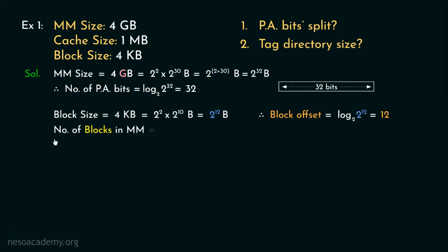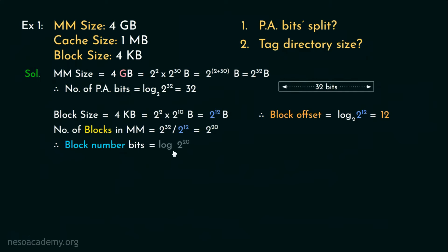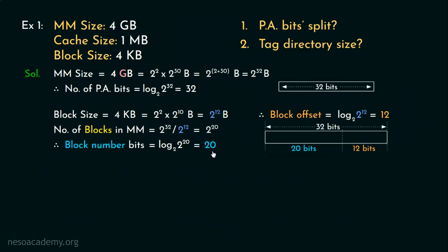To figure out the number of blocks in main memory, we divide the main memory size — 2 to the power 32 bytes — by the block size — 2 to the power 12 bytes — resulting in 2 to the power 20, because 32 minus 12 is 20. Therefore the number of block number bits is log base 2 of 2 to the power 20, which gives 20 bits. So from the 32-bit physical address, the 12 least significant bits are used as block offset and 20 bits are used as block number.